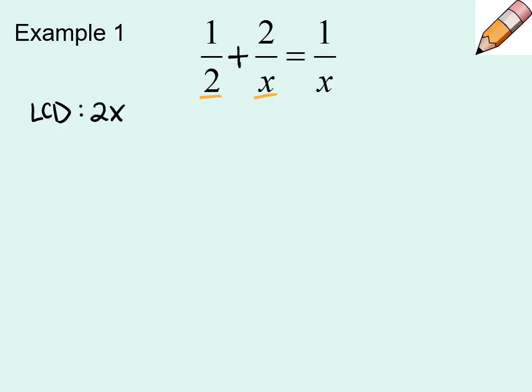Next, we want to multiply each fraction by the piece of the LCD it's missing. So if I take a look at the first fraction, 1 half, it has a 2 in the denominator but it's missing the x. So top and bottom times x. The next fraction is 2 over x. When I look at the LCD it already has an x but it's missing the 2. So top and bottom times 2. The third fraction is 1 over x. Its denominator is x, which means it's missing the 2.